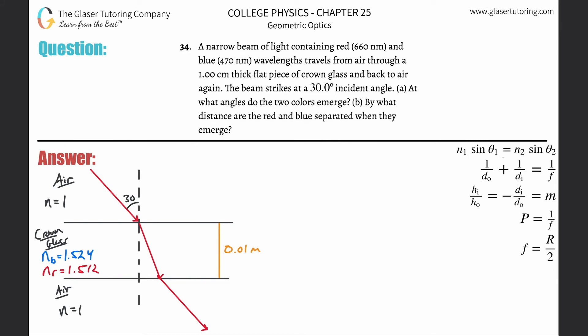Number 34: A narrow beam of light containing red and blue wavelengths travels from air through one centimeter thick flat piece of crown glass and back to air again. The beam strikes at a 30 degree incident angle. Letter A: